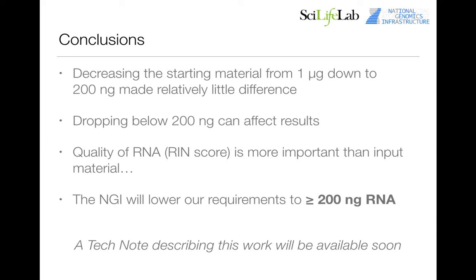To wrap up, this validation shows that going down to 200 nanograms of input RNA makes relatively little difference to the final results in our hands, but going below 200 nanograms starts to become more problematic. It also confirms what we already knew: the quality of input RNA — the RIN value — is more important than the amount of starting material. Based on this, we will shortly be lowering our input requirements from 2 micrograms down to 200 nanograms, which should help everyone submitting samples to NGI.